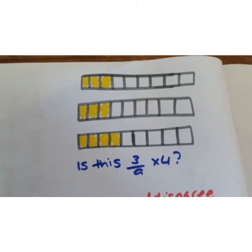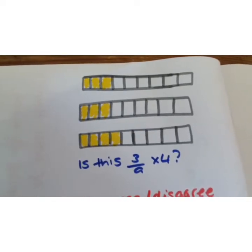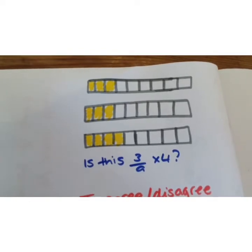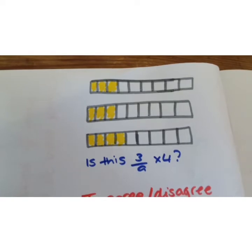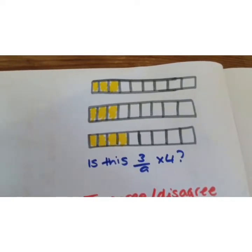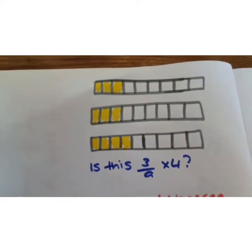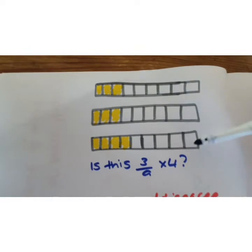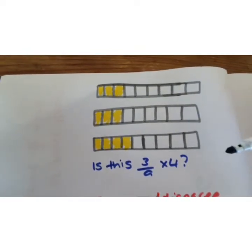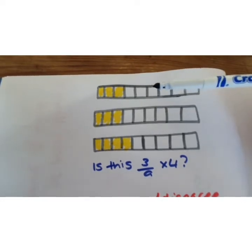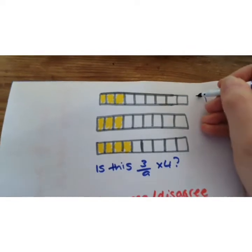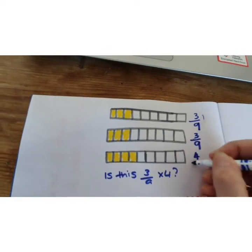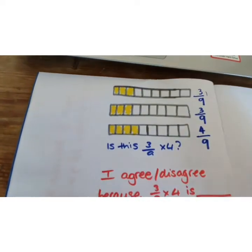The next question said: Mr Monroe says that this diagram shows three ninths times four — do you agree and why? We are going to explain our answer using reasoning skills, either verbally or in writing. Let's check: do we have four rectangles like our integer? One, two, three — no. Do we have three ninths in each image? One, two, three out of nine — yes, this shows three ninths. But this other diagram doesn't show three ninths; it shows four ninths.